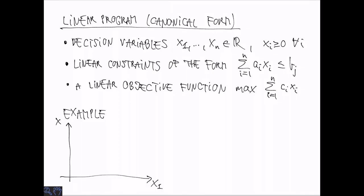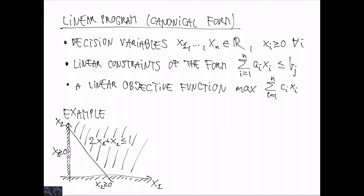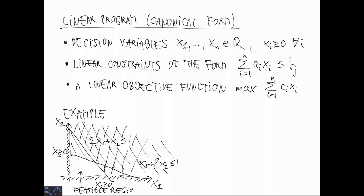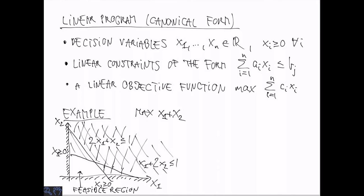Let's look at a small example. In two dimensions we can draw the set of feasible solutions to the linear program. We have the constraint that each variable should be non-negative, so the feasible region is in the upper right quadrant. We can introduce constraints: 2x1 + x2 ≤ 1 and x1 + 2x2 ≤ 1. The grayed-out areas are not feasible; the feasible region is in the bottom left corner. The objective function x1 + x2 means the further up-right we go, the better, so the optimal solution is the one shown.